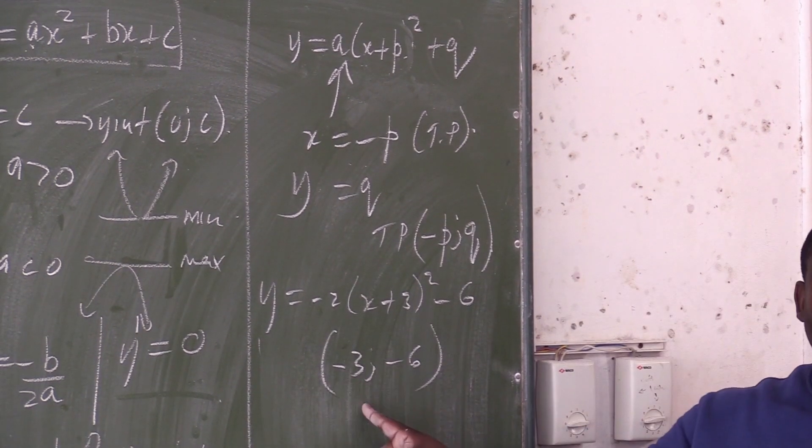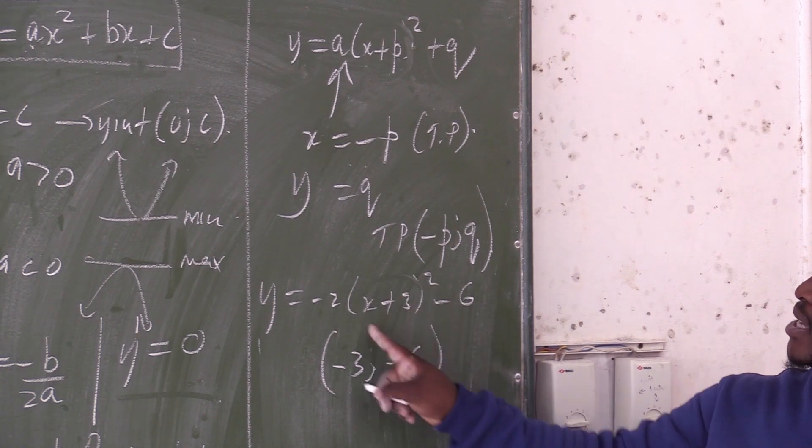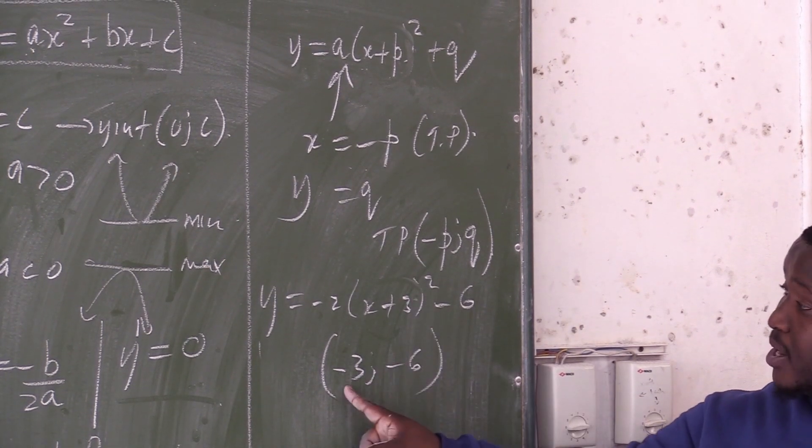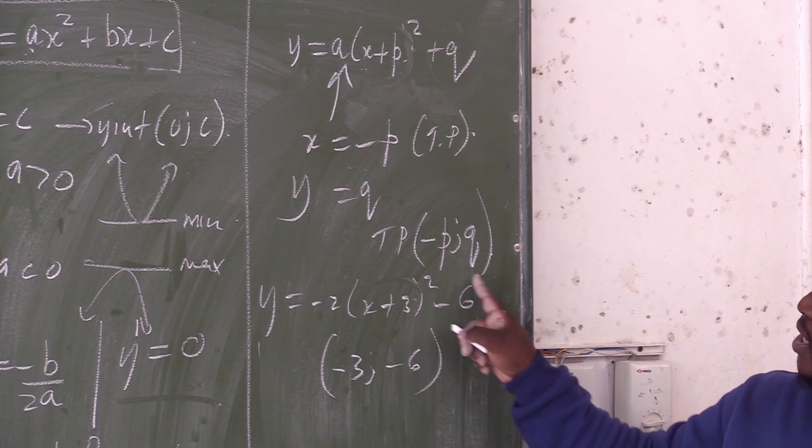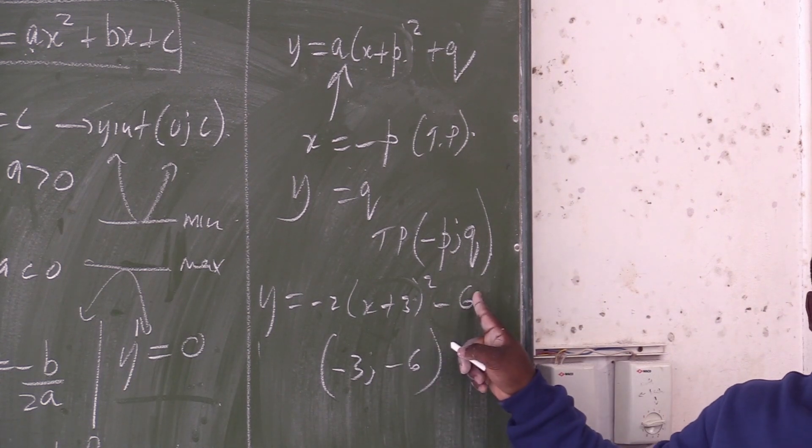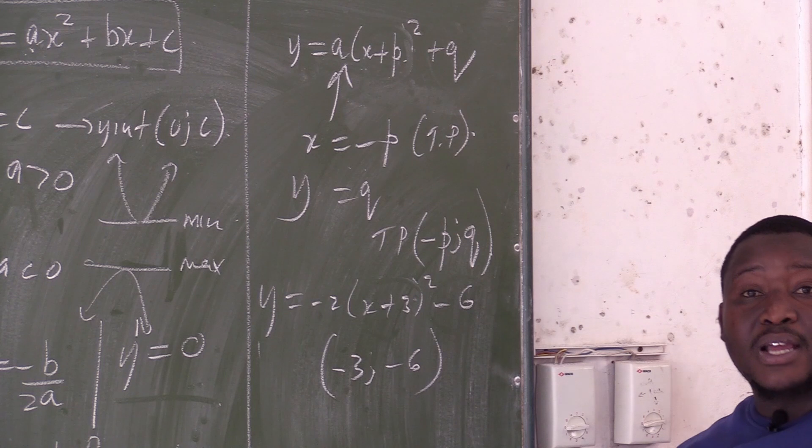Why am I having a negative 3? Because you take whatever is inside the brackets, equal to 0, find x, and then x will be negative 3. The y value, you take this y as it is to give you the y value at the turning point.